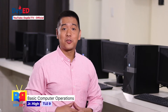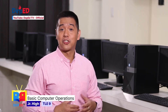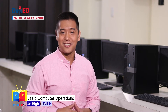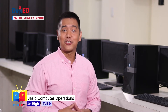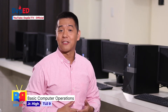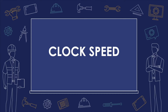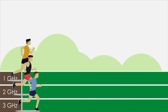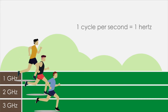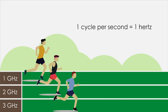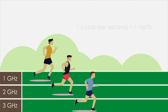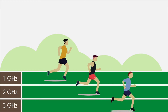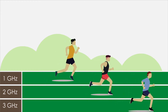Do you sometimes complain that your computer is slow? Maybe it has something to do with your central processing unit. There are three main factors that affect how the CPU carries out instructions. First is the clock speed, which is measured by hertz — in cycles per second, where one cycle per second is known as 1 hertz. This means that a CPU with a clock speed of 2 GHz can carry out 2,000 million or 2 billion cycles per second.